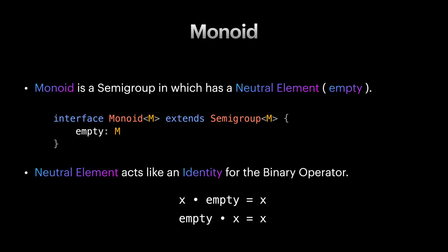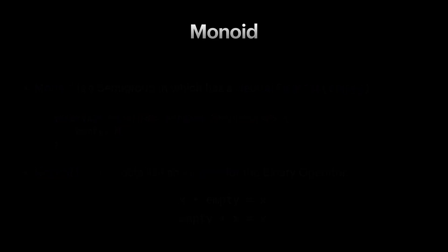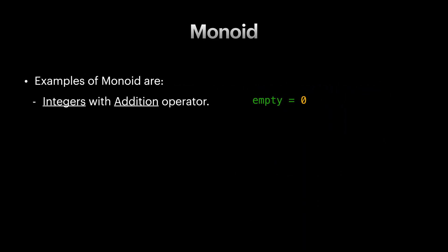It acts like zero in integers for addition. And as a matter of fact, integer and addition is a monoid and zero is the empty value for it. For example, if we try to concat twelve with zero from either side, both lead to twelve, and this is valid for any integer.